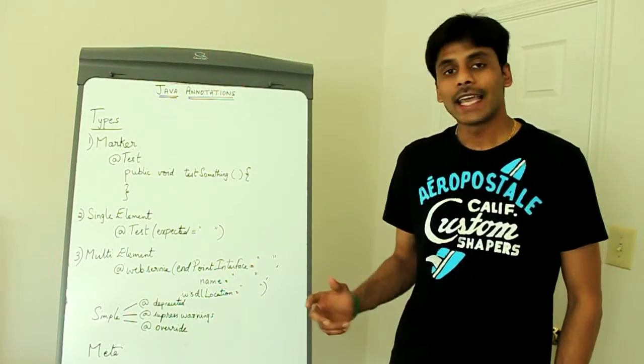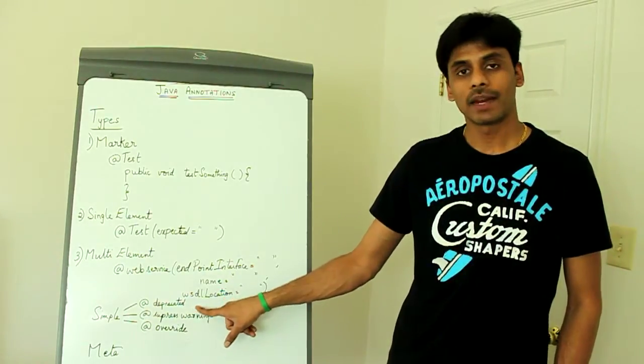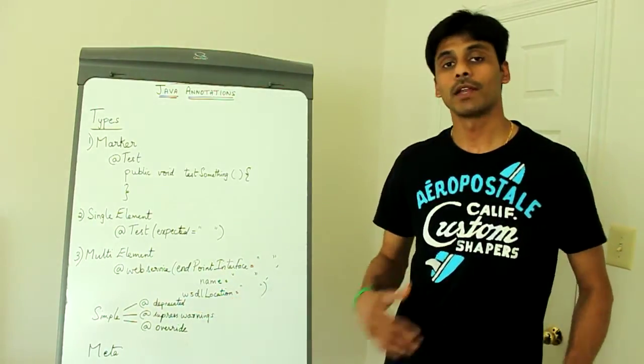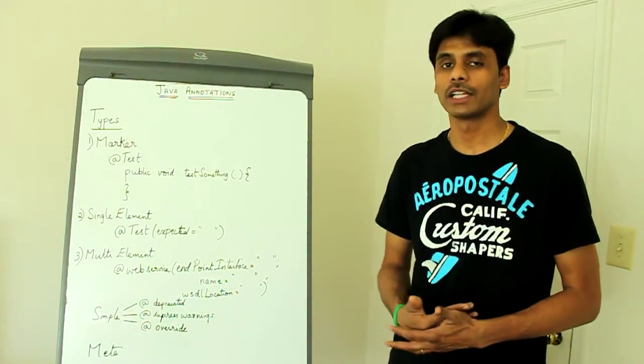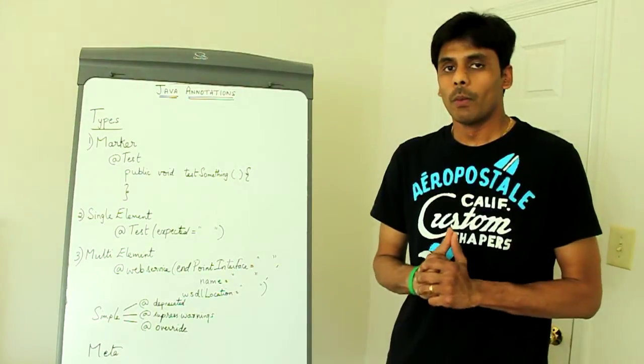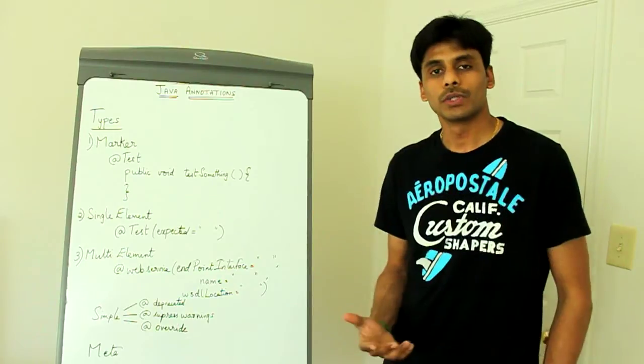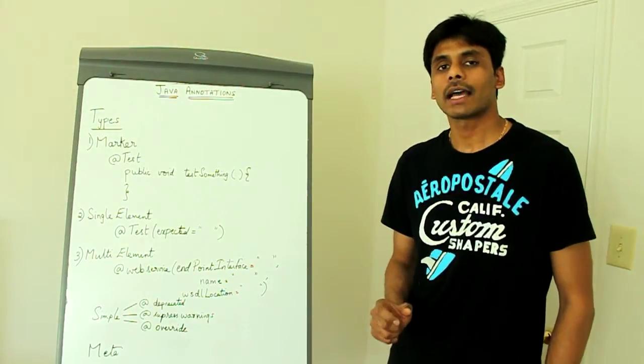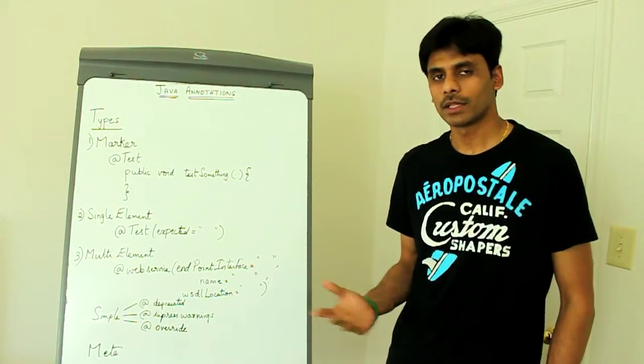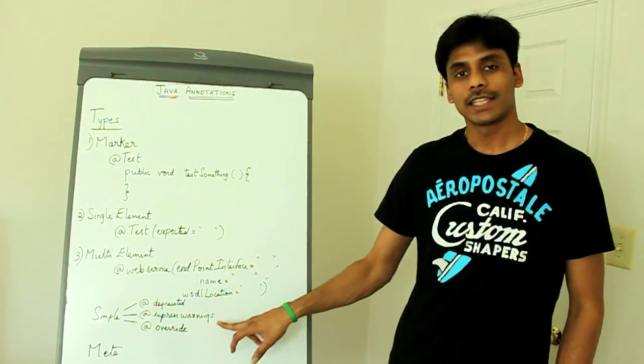The JDK by default offers three simple annotations. They are the at deprecated annotation which when you use to mark your classes or fields or methods will mark them as deprecated and if some other class or method tries to use them, they will receive a compile time warning saying that the method or field is deprecated. The at suppress warnings does the opposite.